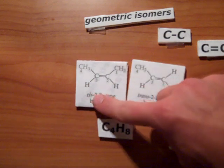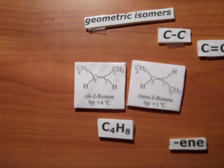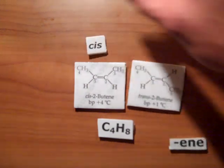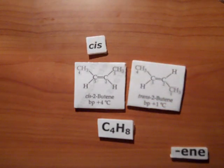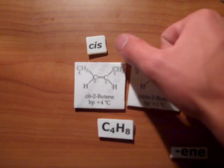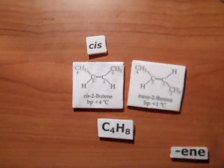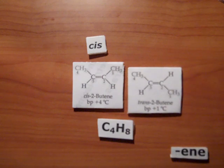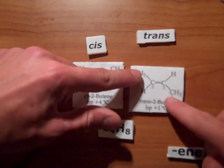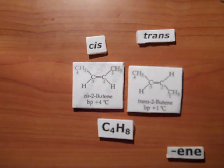This right here is called the cis isomer, and the two methyl groups are on the same side of the double bond. This right here is called the trans isomer, and the two methyl groups are on opposite sides of the double bond. These geometric isomers have their own physical qualities and varying chemical behavior.